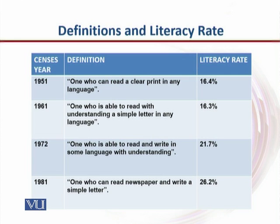With that definition, in 1961, the literacy rate in Pakistan was 16.3%. So more or less, in 1951 and in 1961, the rates were the same — 16.4% and 16.3%, not a great difference. Whether they were reading with understanding or without, the literacy rate stayed more or less constant over that ten-year period.